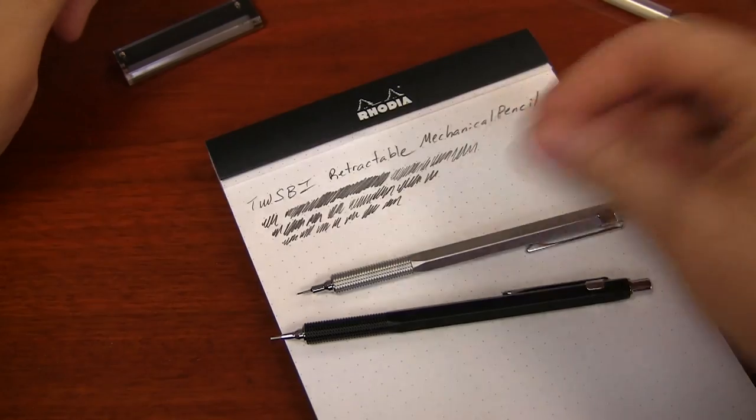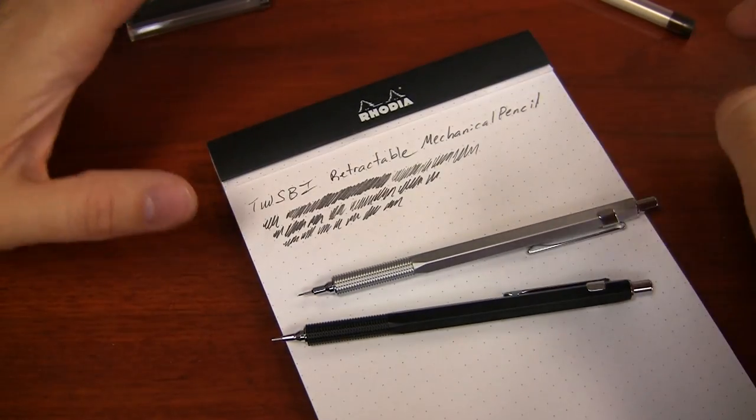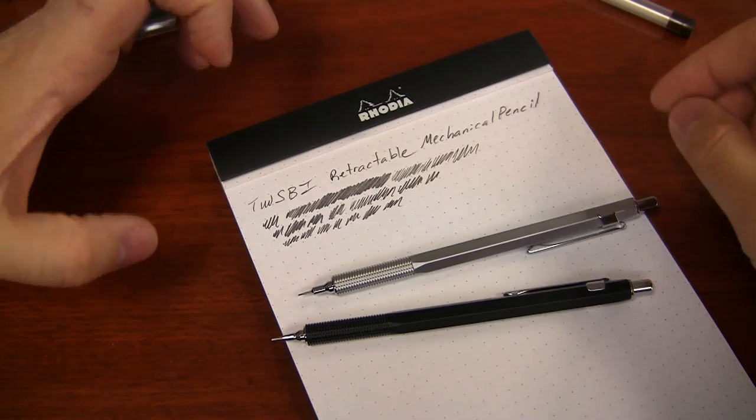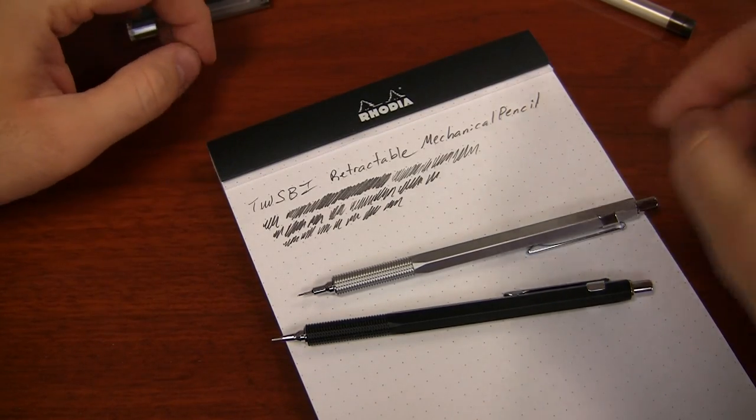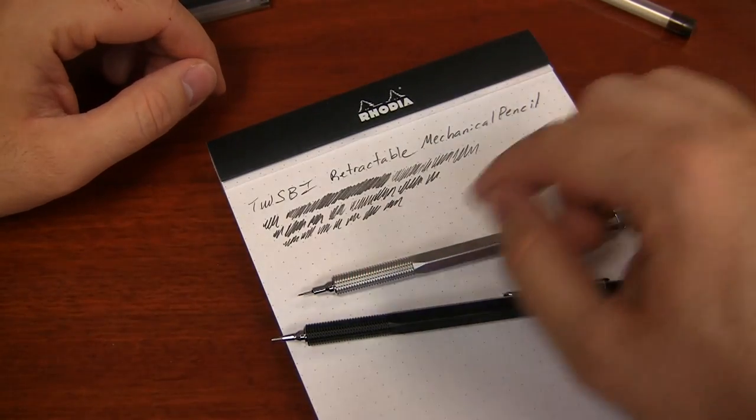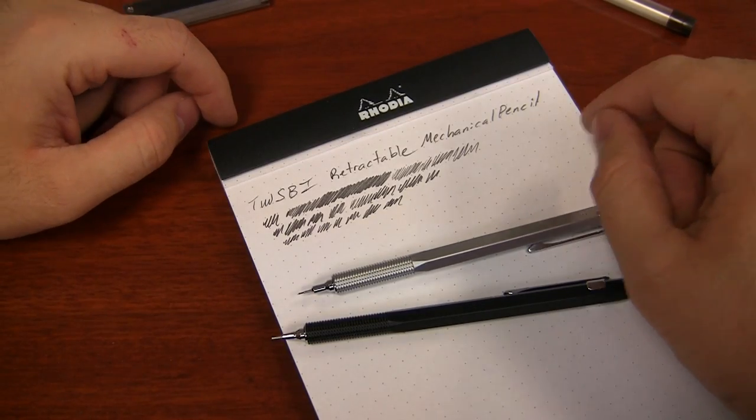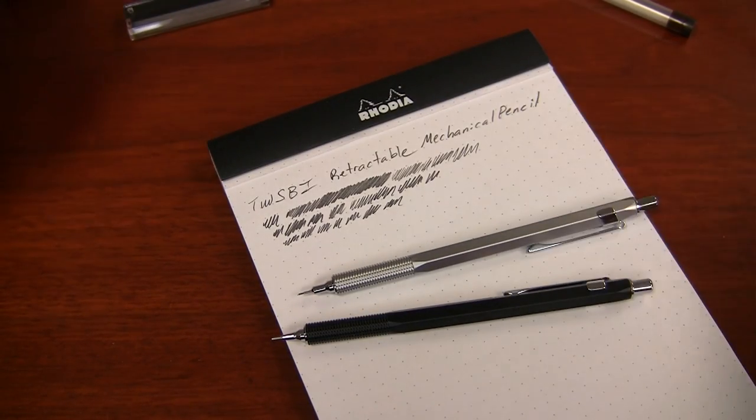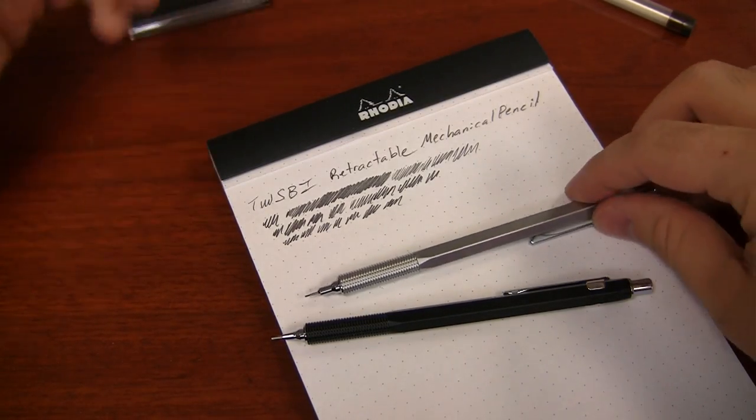Because fountain pens, you're usually trying to get the smoothest writing experience you can. Pencils, not necessarily. It depends on what you're going for, how dark you want it to be and stuff. If you've got a paper that's a little rougher, a little toothier, the pencil may actually perform a little better. It really just depends on what you're trying to do with it. But in any case, hopefully that gives you a little bit of an idea of what's up with the TWSBI Mechanical Pencil.